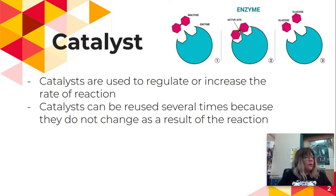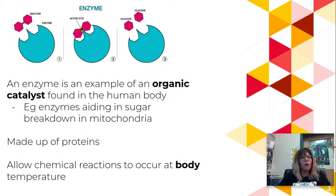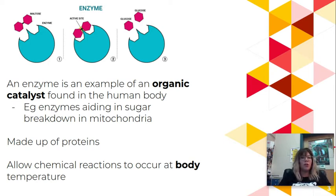We're going to talk about a catalyst. A catalyst is something you've heard about probably in Science 9 or Science 10, and if you've taken Chem 20 you might have heard of it there. A catalyst is used to increase the rate of a reaction. It's used several times because it doesn't ever get used up, so we can use it again and again. In biology the one we're going to talk about is the organic catalyst called an enzyme. Enzymes are used throughout our body regularly, specifically in digestion, and they help us aid different processes.